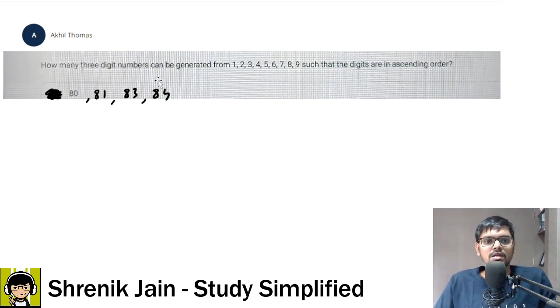The question says how many three digit numbers can be generated from 1, 2, 3, 4, 5, 6, 7, 8, 9 such that the digits are in ascending order? Options are 80, 81, 83, 84.